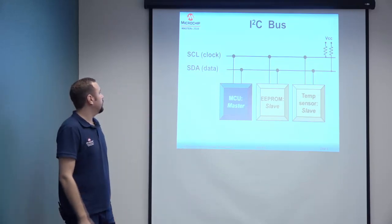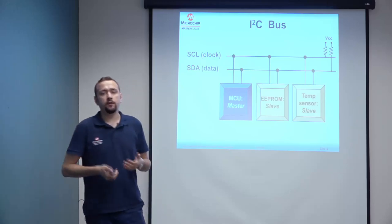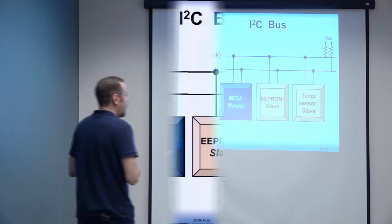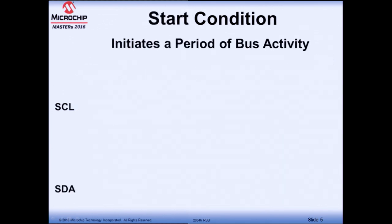Now we know the building blocks of the I2C bus. Every bus — regardless of implementation, be it I2C, SPI, or UNIO — is designed to move data around. We're going to see what building blocks we need before being able to do that. We start with a start condition, which is required to signal to all slaves on the bus that communication is about to happen. The start condition is the SDA line being pulled low while the clock is being held high. It's always enforced by the master.